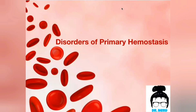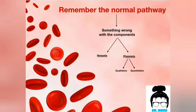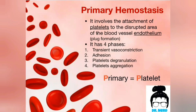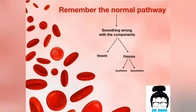Now that we have the normal physiology, we can discuss the disorders. The main two components in primary hemostasis are the platelets and the blood vessel. Whenever something is wrong with one of them, there is something wrong with primary hemostasis. Our area of concern today is platelet disorders. Platelet disorders are divided into two types: quantitative, where the platelet count is low, and qualitative, where the platelet count is fine but the platelet function is the issue.